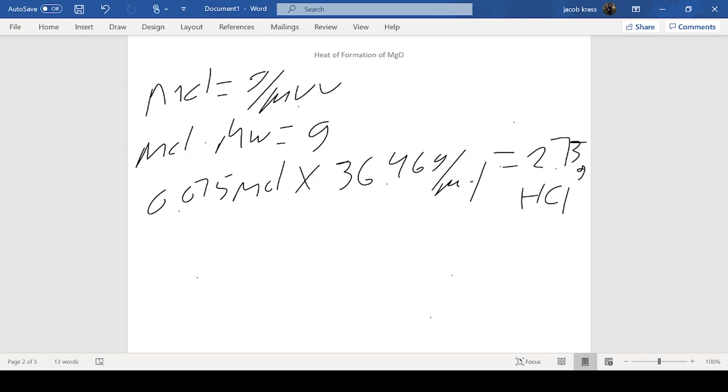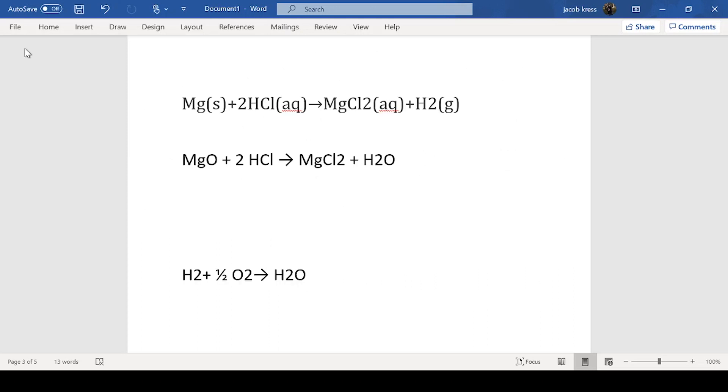So now this is the grams of just the HCl by itself. We calculated the grams of the total solution, which was 76.35. You can see if we take the total solution mass and subtract the mass of the HCl, that will leave the mass of the water. If you subtract, we get 73.62 grams of water, and that will be our mass of water that we'll use to calculate our delta H.